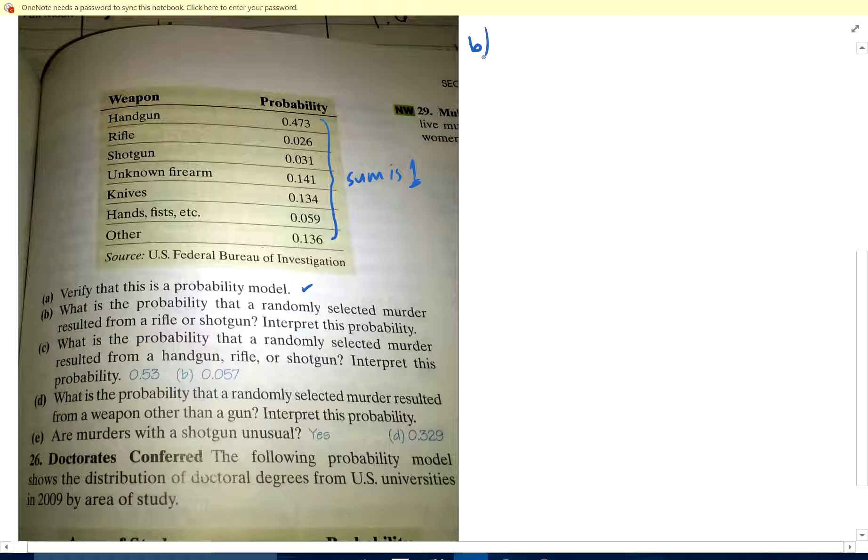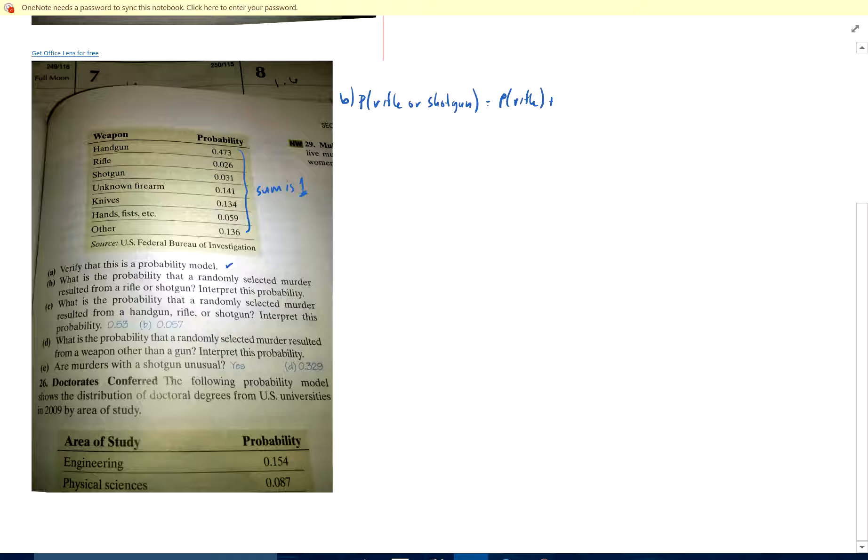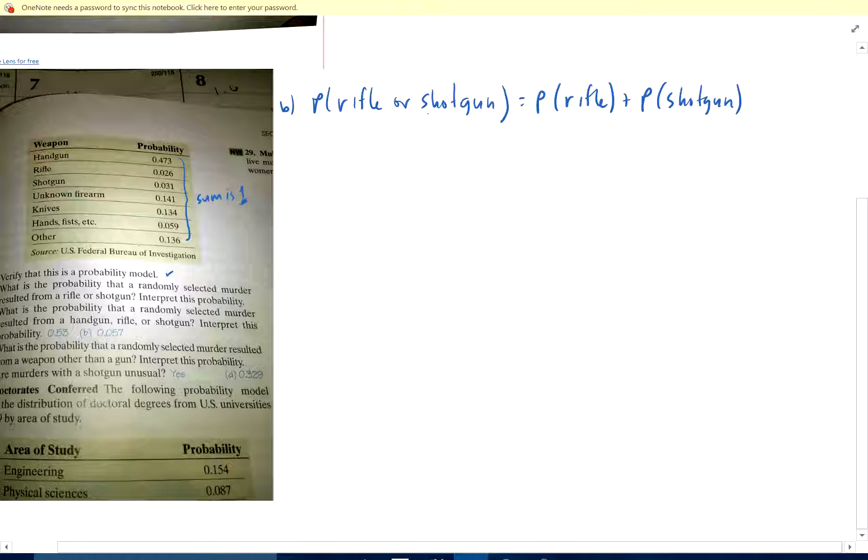What's the probability that a randomly selected murder resulted from a rifle or shotgun? Probability of a rifle or a shotgun. Here's the probability of a rifle plus the probability of a shotgun minus the probability of both.